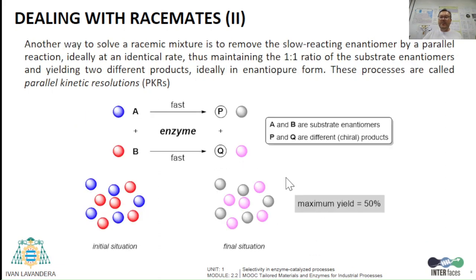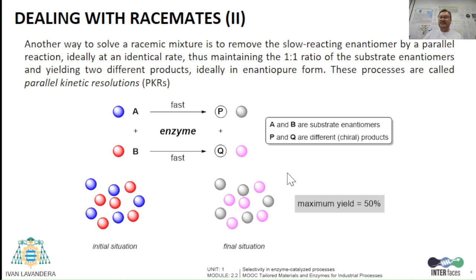If both enantiomers of a racemic mixture can react with the enzyme by yielding two different products, ideally in enantiopure form, and which can be easily separated, the biocatalysis is mediated in a parallel kinetic resolution. In this example, P and Q are not enantiomers, but different compounds.